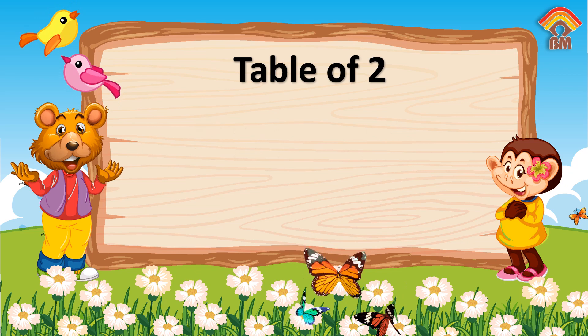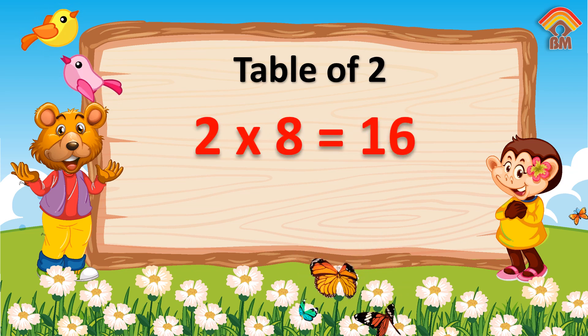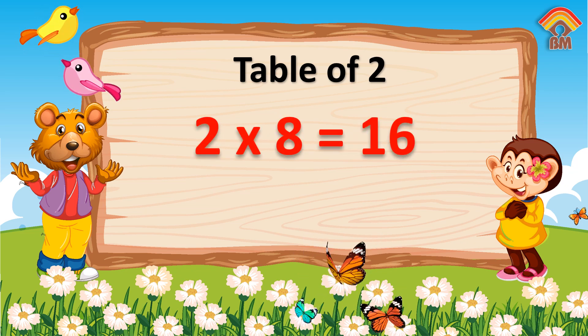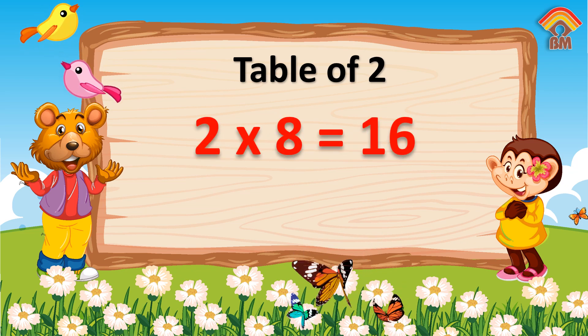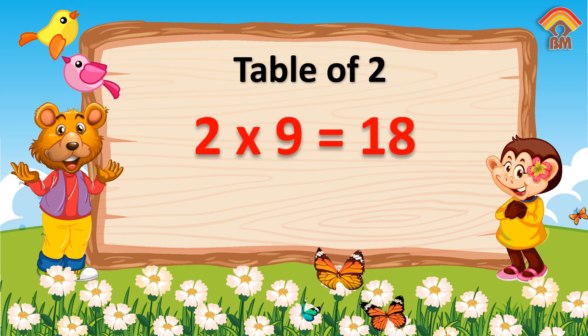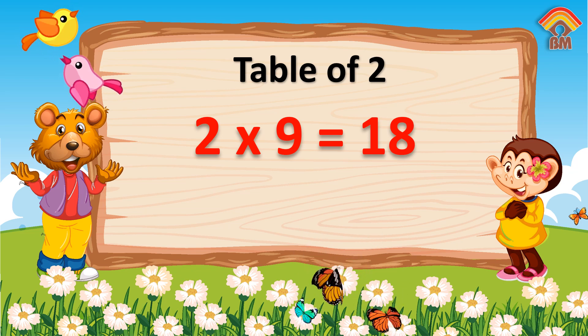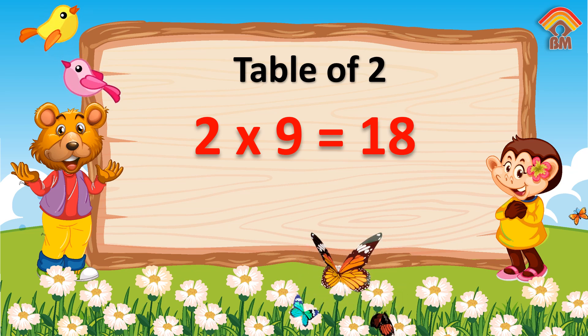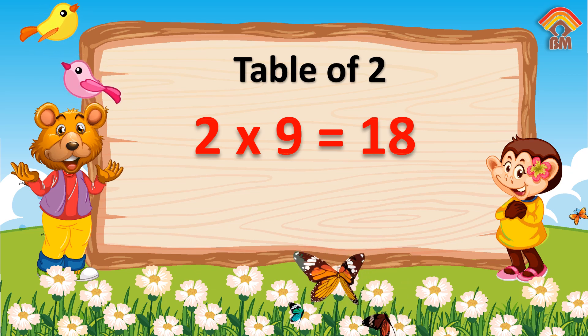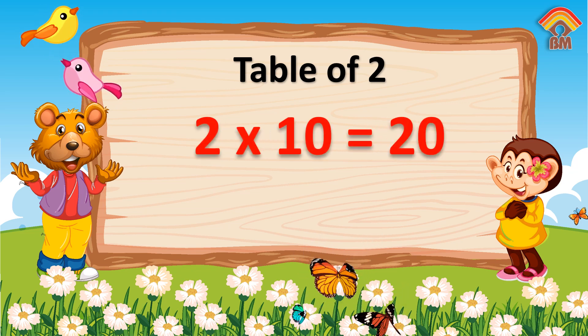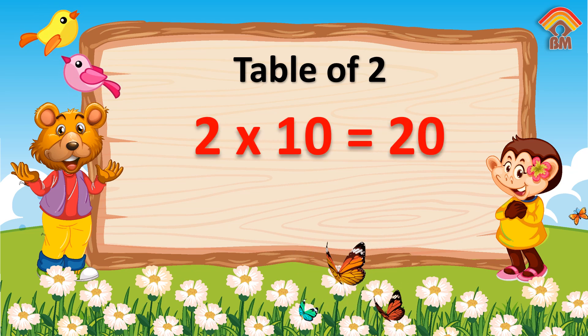Two eights are sixteen. Two nines are eighteen. Two tens are twenty.